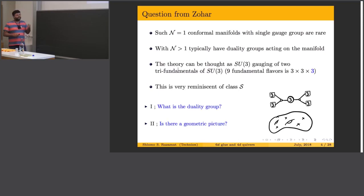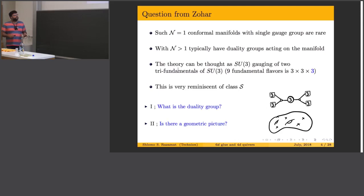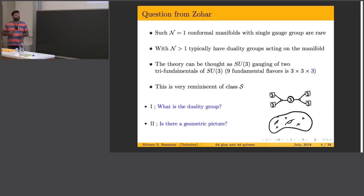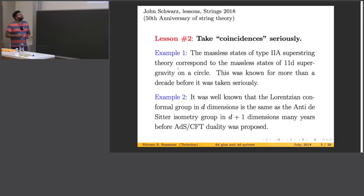If you have followed the Class S story with N=2 supersymmetry, there is a very nice class of theories where you take tri-fundamentals of SU(2) and glue them together with N=2 gauging and obtain a class of theories with many interesting dualities. Zohar had asked me, two or three years ago, these two questions: first, there is this nice theory with a conformal manifold — is there any duality group acting on it? And second, related to this picture, is there a geometric realization of this theory? I thought about these questions but didn't have a machine which translates cute observations to physical results. But this lesson is very important and the question stuck in my mind.